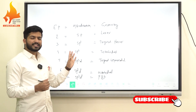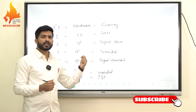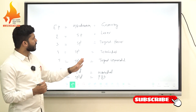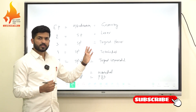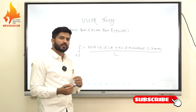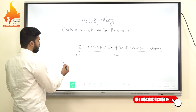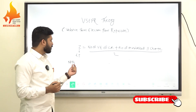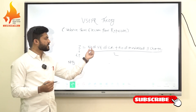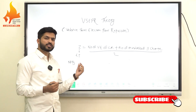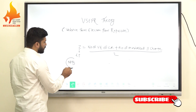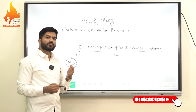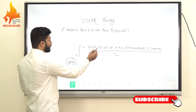From this table we can easily find out the hybridization, geometry, and shape of any given molecule. Now we can take a simple example — NH3. We have to find out the shape of NH3 using the formula to calculate hybridization and shape. The central atom in NH3 is nitrogen.